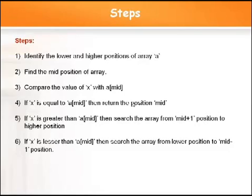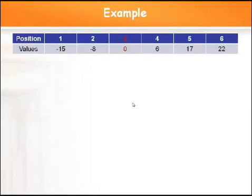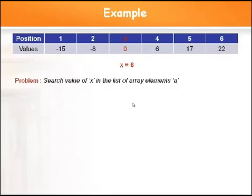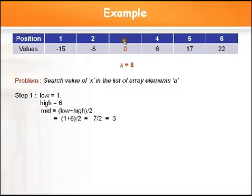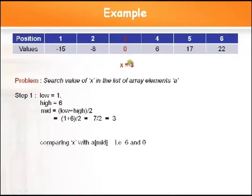Let us see with an example. Consider an array of six elements whose index starts from 1 and ends with 6, and X is given as 6 — the element to be searched. The first step: identify the lower and higher boundaries. Lower boundary is 1 and higher boundary is 6. Calculate mid position as (low + high) / 2 = 7 / 2 = 3. Now compare X with A[mid], that is compare 6 with A[3].